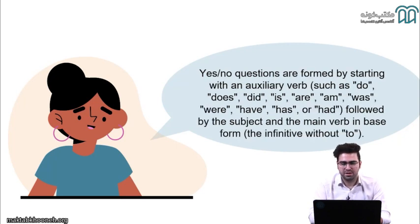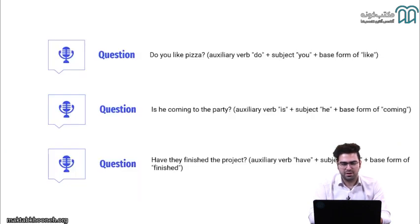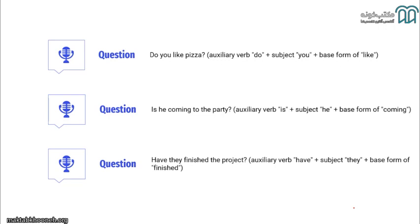Yes/no questions are formed by starting with an auxiliary verb such as do you, does she, did you, is that person, are you, am I, was she, were they, have you, has you or had you, followed by the subject and the main verb in the base form, the infinitive without to. Examples: Do you like pizza? Is he coming to the party? Have they finished the project?